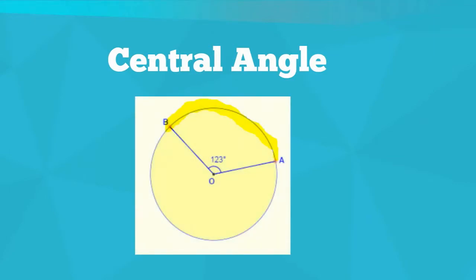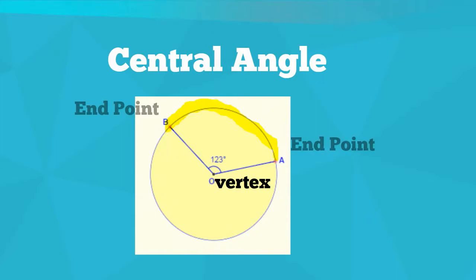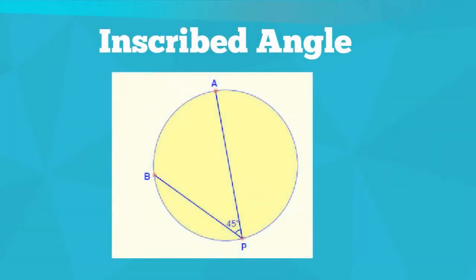The central angle of a circle is an angle with a vertex in the center of the circle with endpoints that lie on the circle. The central angle equals the arc measure.